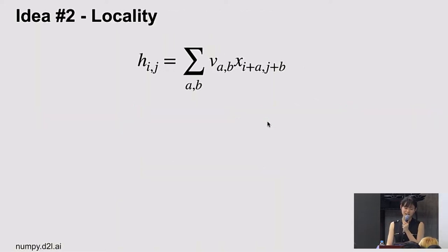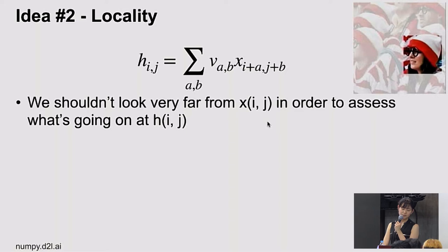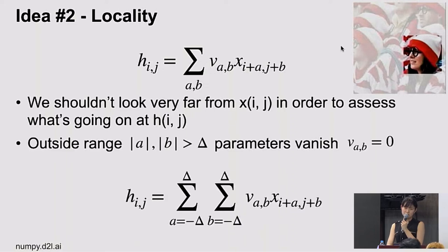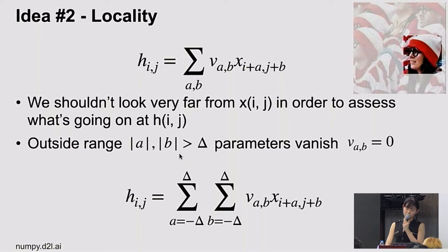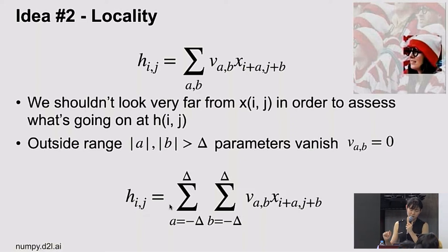Applying the locality principle: recognizing a local object shouldn't depend on pixels far away. So if the offset (a,b) is too large — meaning the pixel is far from the current location — we set that weight to zero. This restricts the summation to a local delta range: h_{i,j} = Σ_{|a|,|b| ≤ Δ} V_{a,b} × x_{i+a, j+b}. This is essentially the convolution (cross-correlation) operation.